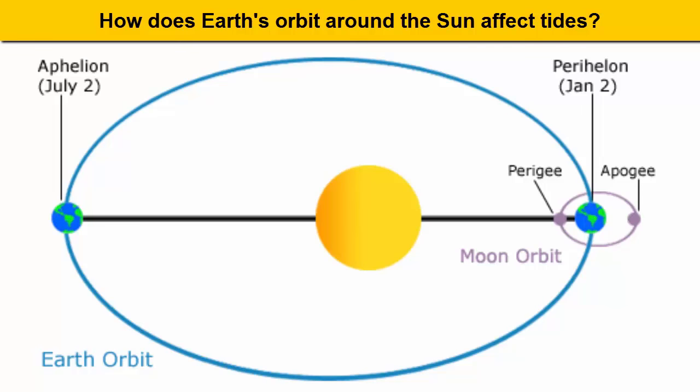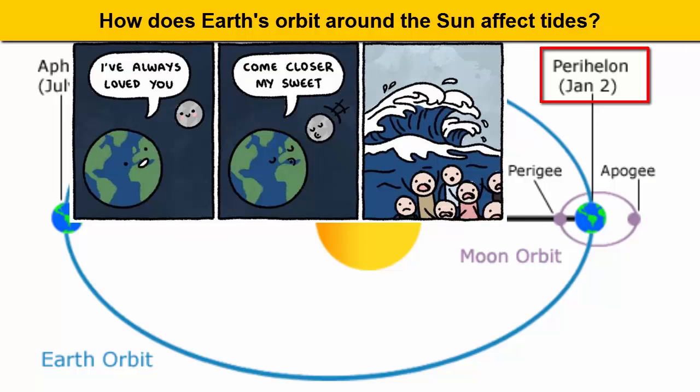How does Earth's orbit around the Sun affect the tides? Because the Sun's orbit is actually an ellipse, in January the Earth is a little closer to the Sun than the rest of the year. Remember this cartoon?